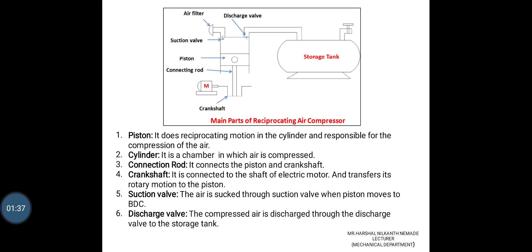You may see the figure shown. Piston: It does the reciprocating motion in the cylinder and is responsible for the compression of the air. Cylinder: It is a chamber in which the air is compressed. Connecting Rod: It connects the piston and the crankshaft.